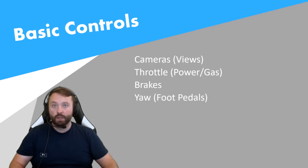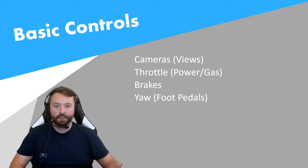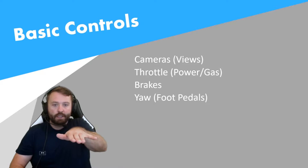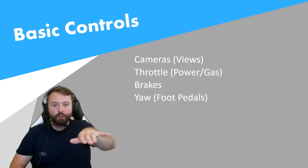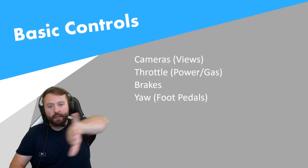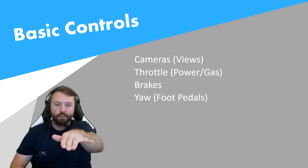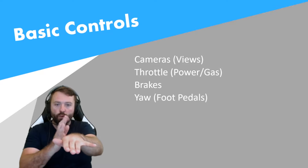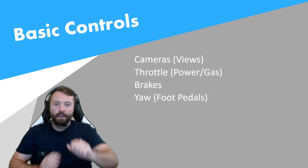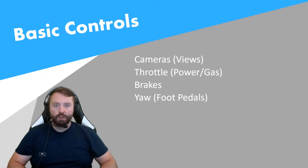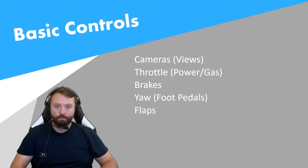Next is yaw. This one actually confuses a lot of people who aren't in aviation. It's the left and right movement of the airplane. Usually when you're in the air you turn like this, but on the ground you have to turn like this, which is moving the rudder in the very back, and you do that with your foot pedals. So that's yaw — we'll talk about that.